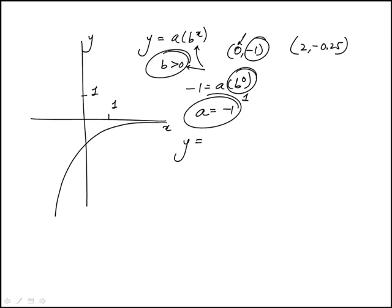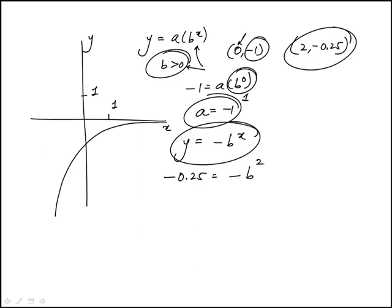So our function is minus b to the power of x. So this is the second condition we have. When x is 2, y is minus 0.25. So if we have negative on both sides, that becomes positive. So b squared, 0.25 is 1 fourth, b is plus or minus 1 over 2, but we're told b is positive. Therefore, b is half or 0.5.